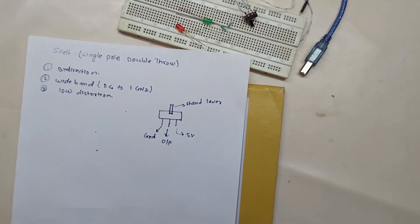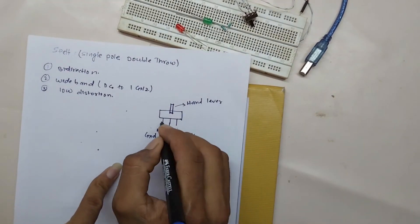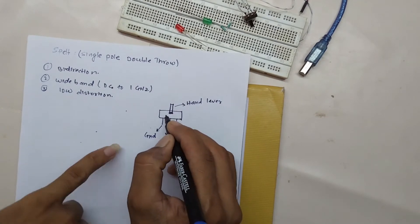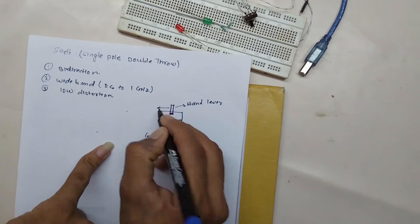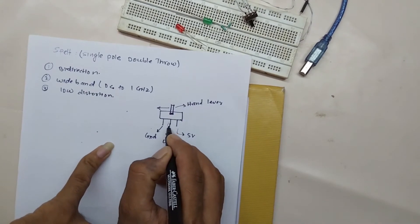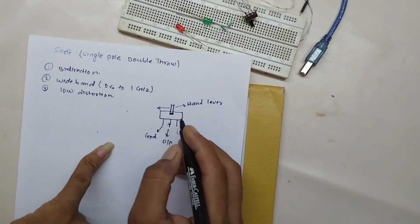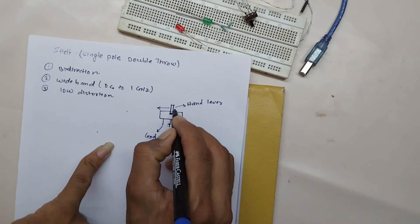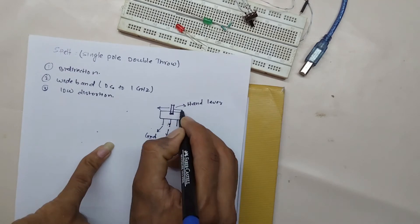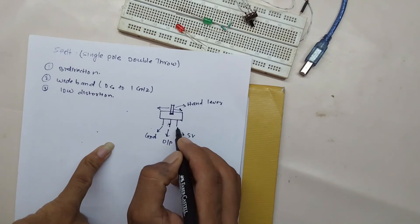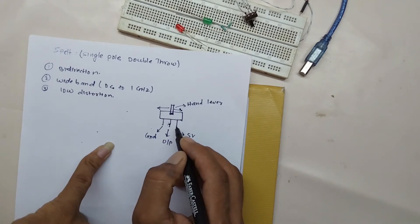Let's look at the structure of SPDT. There are two conductors. When the hand lever is pushed in one direction, the output pin and ground pin will both connect. When the hand lever is pulled the other way, the output pin and 5V pin will connect to each other.